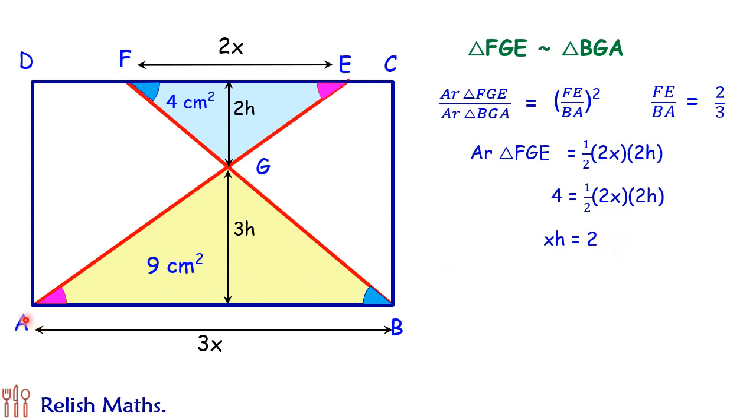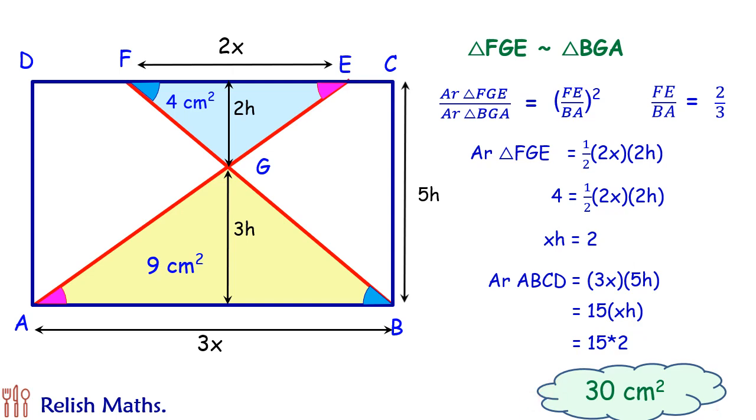Let's check what is the area of ABCD rectangle. For that the length of the rectangle is 3X and the breadth of the rectangle is 2H plus 3H which gives me 5H. So we can say area of rectangle ABCD is 3X times 5H or 15 times X into H. Now we will use this observation that X times H is 2 to get area of rectangle as 30 centimeter square. And that's our answer.